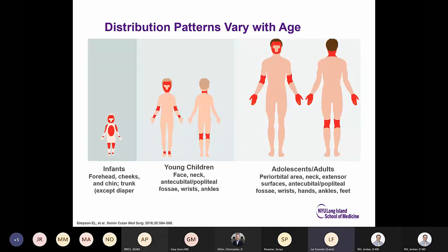Distribution patterns vary with age. In infants, it's the forehead, cheeks, and chin, and can involve the trunk. Young children have face, neck, antecubital, and posterior popliteal areas. In adolescents and adults, you will see the neck, hands, and flexural areas as well.